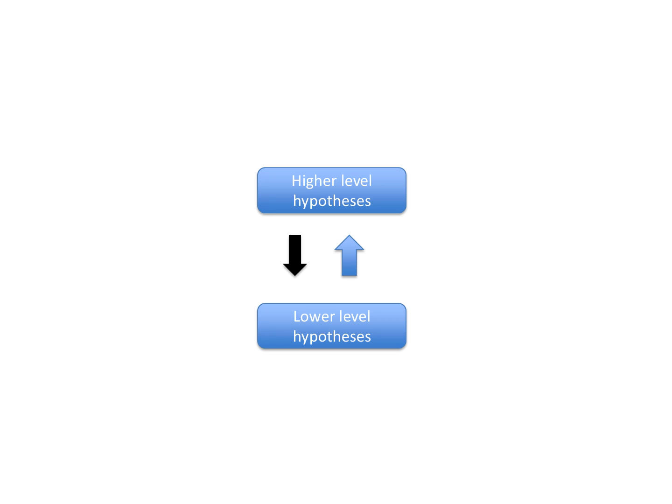Those prediction errors that are expected to be precise or reliable are amplified. The gain is turned up. And those that are expected to be imprecise are dampened. The gain is turned down. This ensures that the more reliable prediction errors will drive hypothesis revision, and the ones expected to be less reliable are more likely to be dismissed.